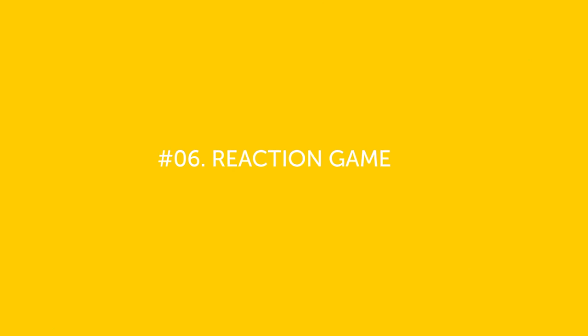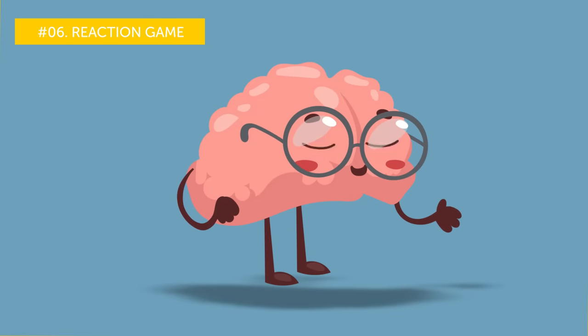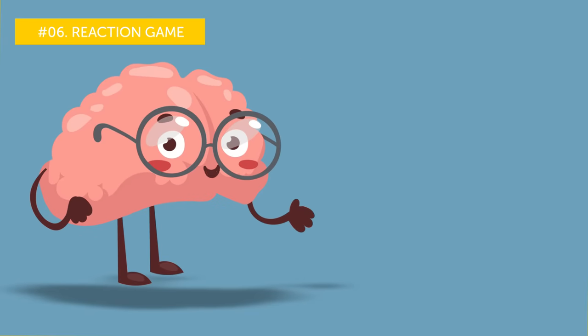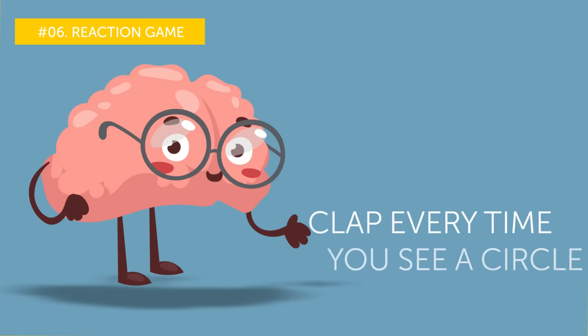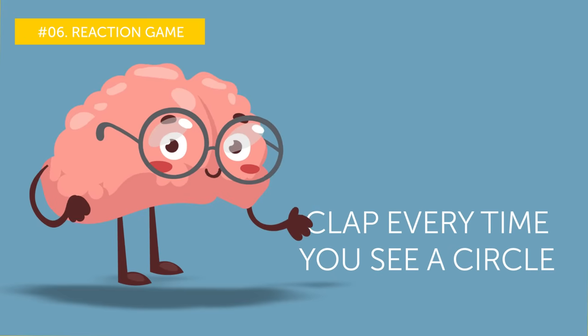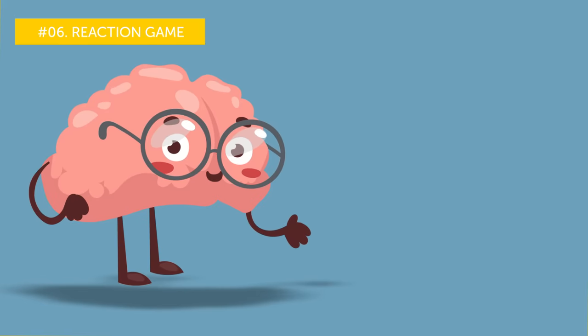Number six. Reaction game. Now that you've trained your memory, it's time for a reaction exercise. You will see different shapes appear on the screen. Your task is to clap every time you see a circle. We'll start with a slow, easy sequence, and then go faster and faster. Ready? Let's go.